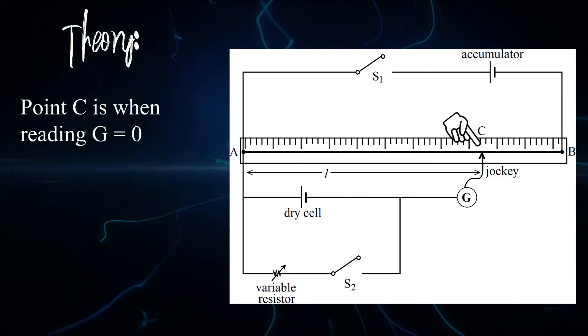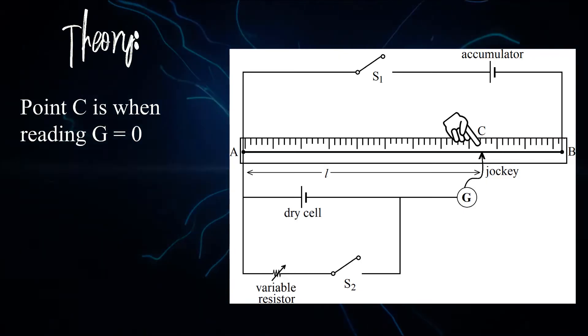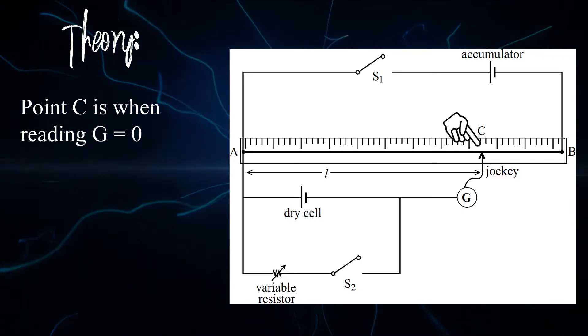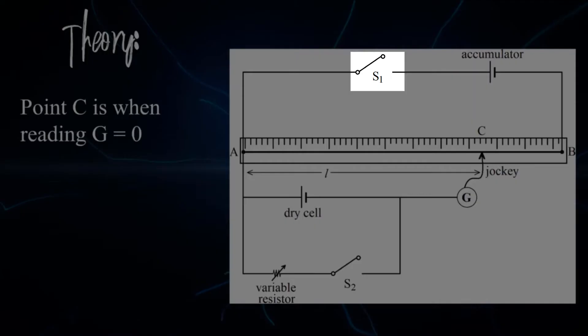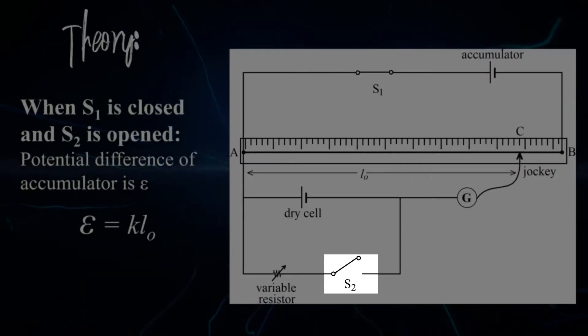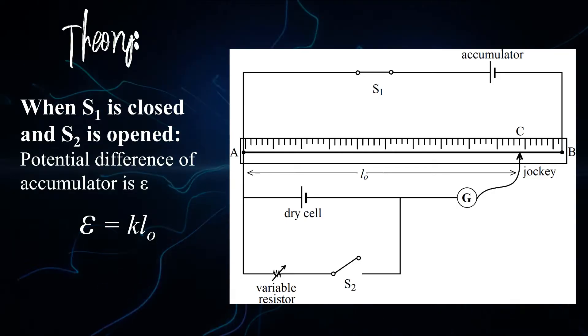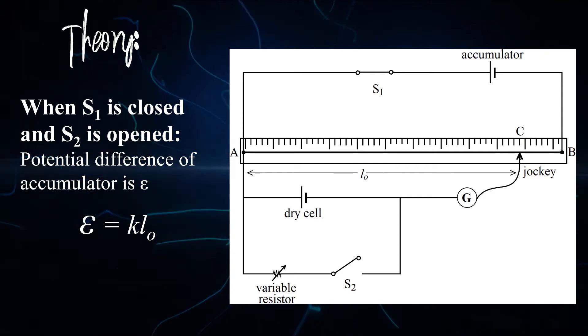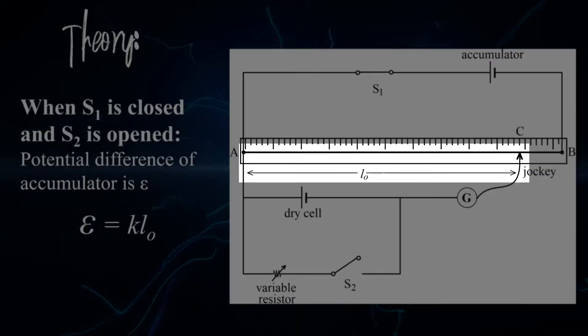Point C is when the reading of the galvanometer is zero. When switch S1 is closed and switch S2 is open, the potential difference of the accumulator is EMF. The length measured from A to C is L0.